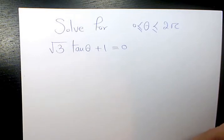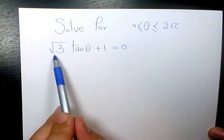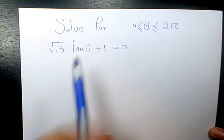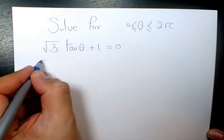In this video, I want to solve this trigonometric equation: √3 tan θ + 1 = 0. First thing I want to do, I want to isolate for tan.